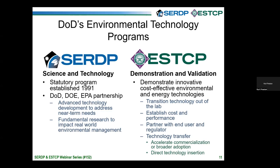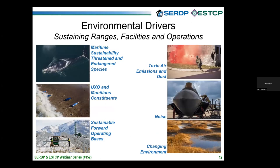SERDP and ESTCP are complementary programs, with much of SERDP research occurring at the lab and pilot scale with occasional field efforts, while ESTCP demonstrations are primarily at the pilot and field scale. There are several environmental drivers for the type of work funded, with the underlying objective of sustaining DoD ranges, facilities, and operations. This is a broad undertaking that includes maritime sustainability, threatened endangered species, climate impacts, unexploded ordnance and munitions constituents, and other environmental drivers.